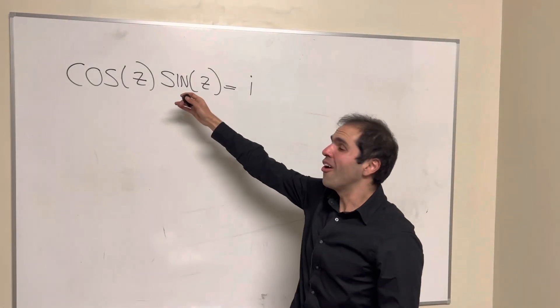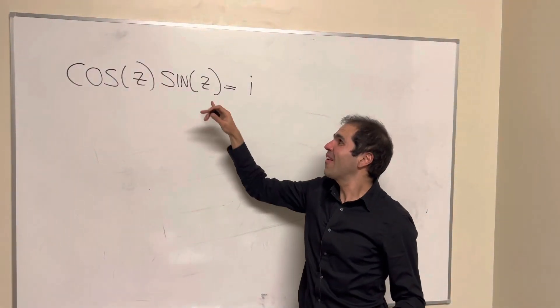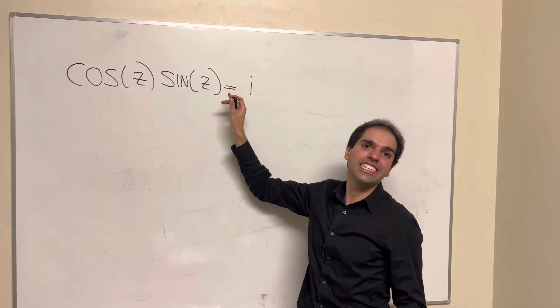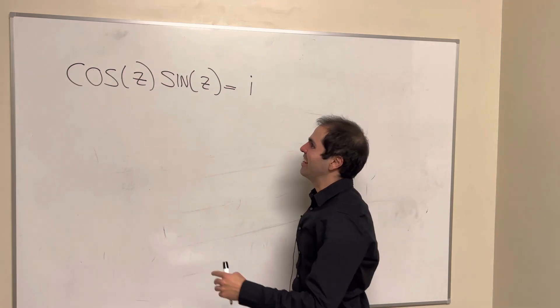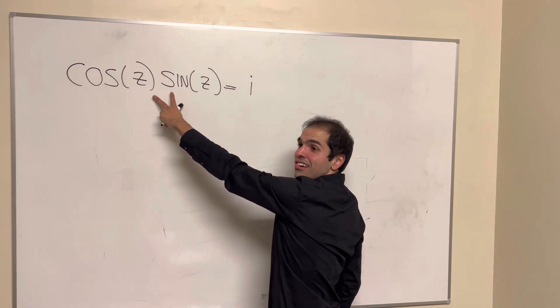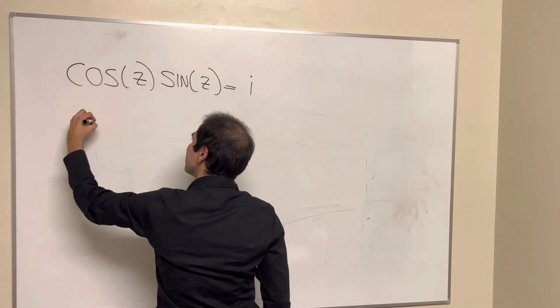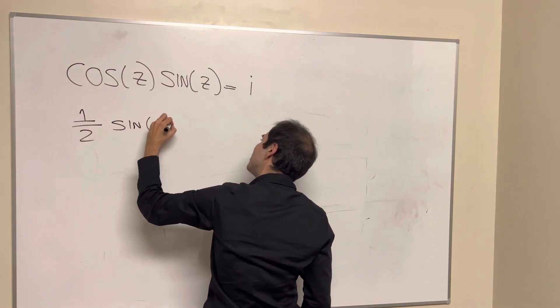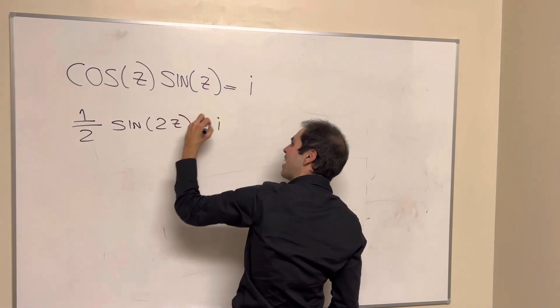Thanks for watching, and let's solve the following neat equation: cosine of z times sine of z equals i. In particular, we can simplify this because this is one-half sine of 2z equals i.